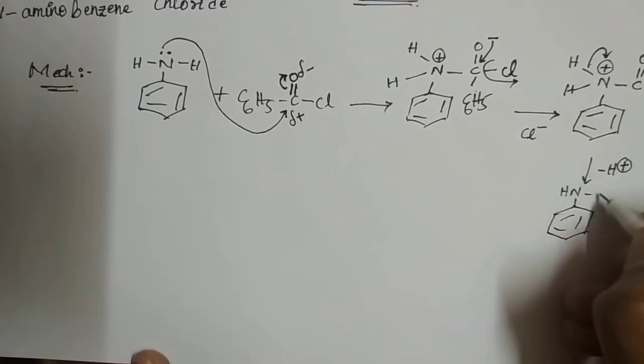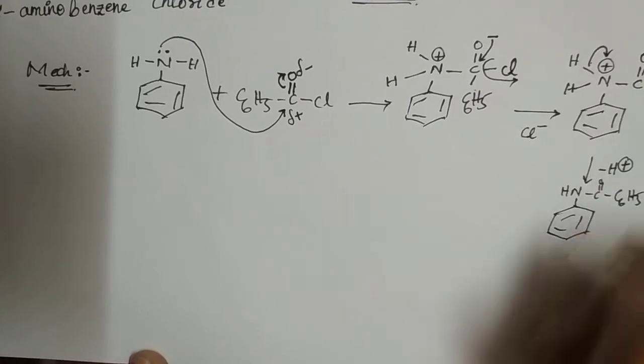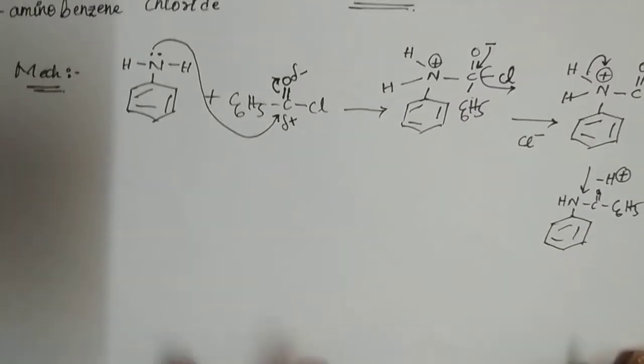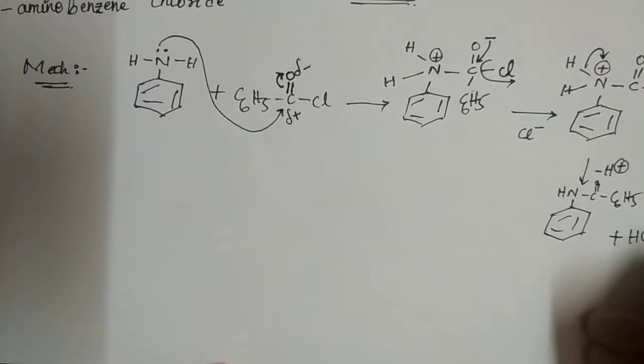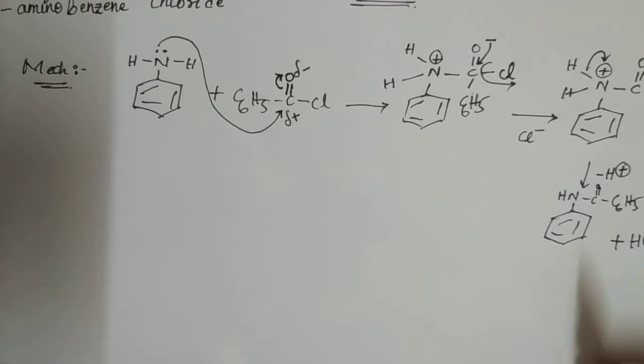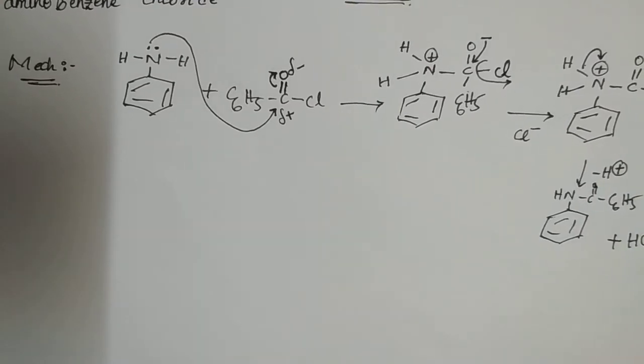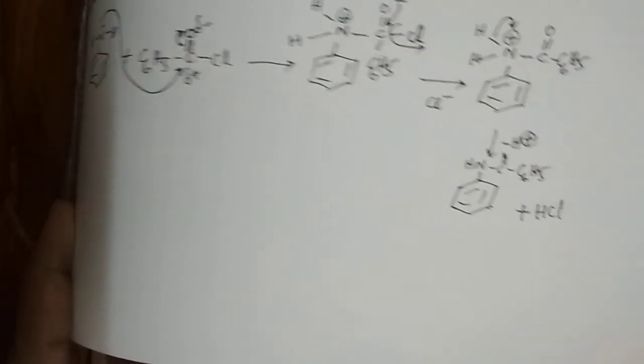And H-C double bond O-C6H5 means what we get lastly plus HCl. Here there is Cl minus and here there is H plus, therefore we get benzanilide, benzanilide.